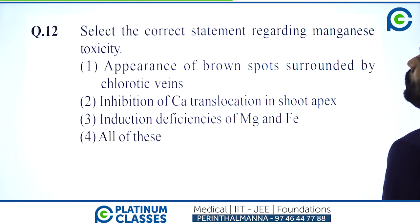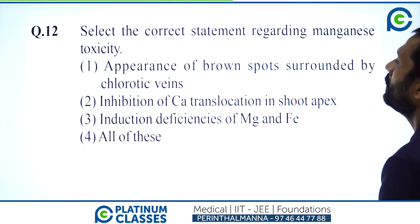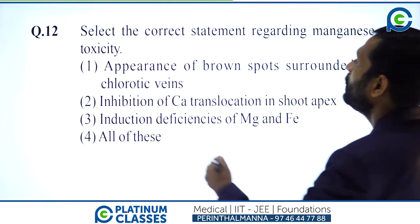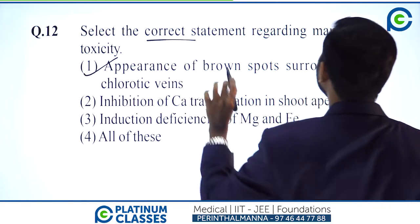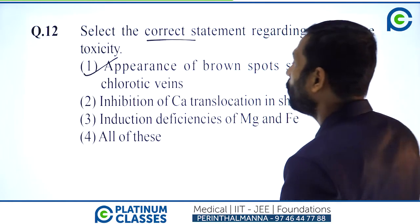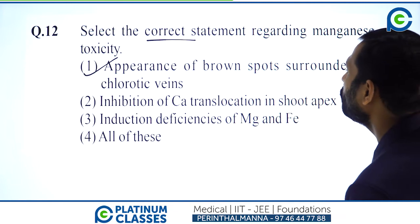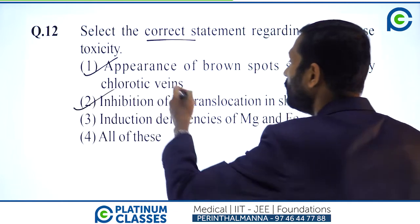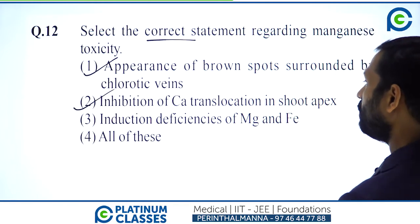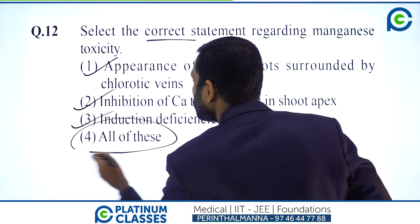Select the correct statement regarding manganese toxicity. Manganese toxicity leads to inhibition of calcium translocation to the shoot, and induction of deficiencies of magnesium and iron. All of these are correct — option 4.